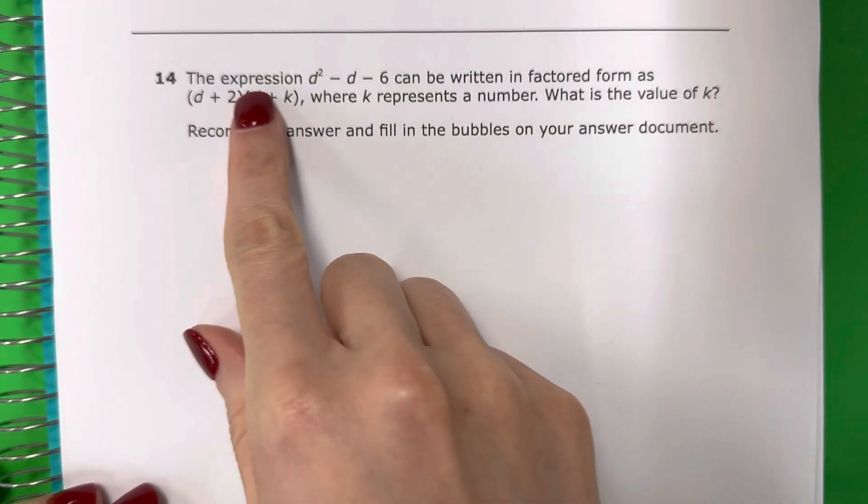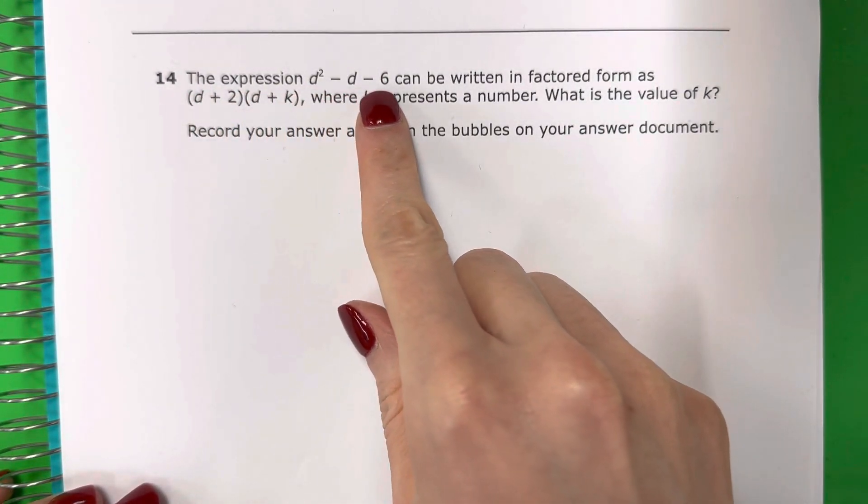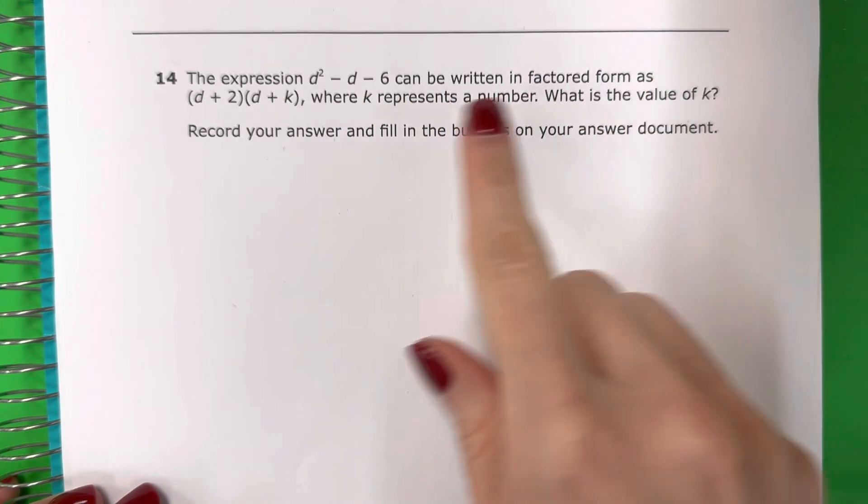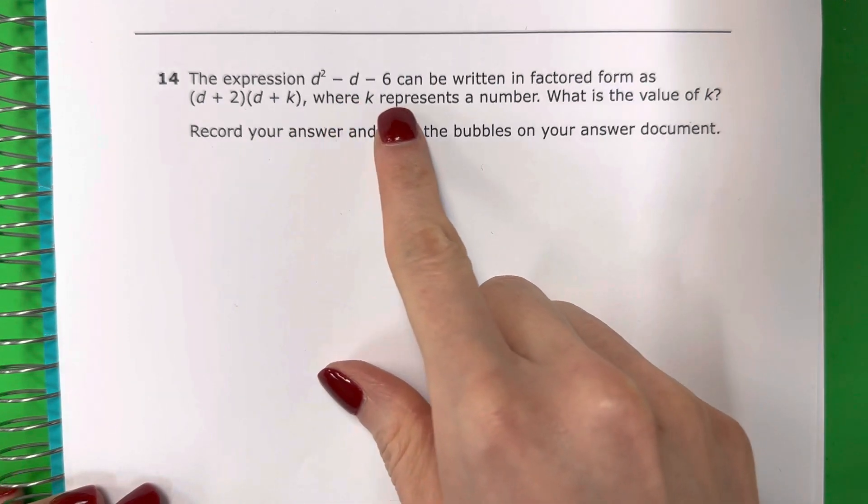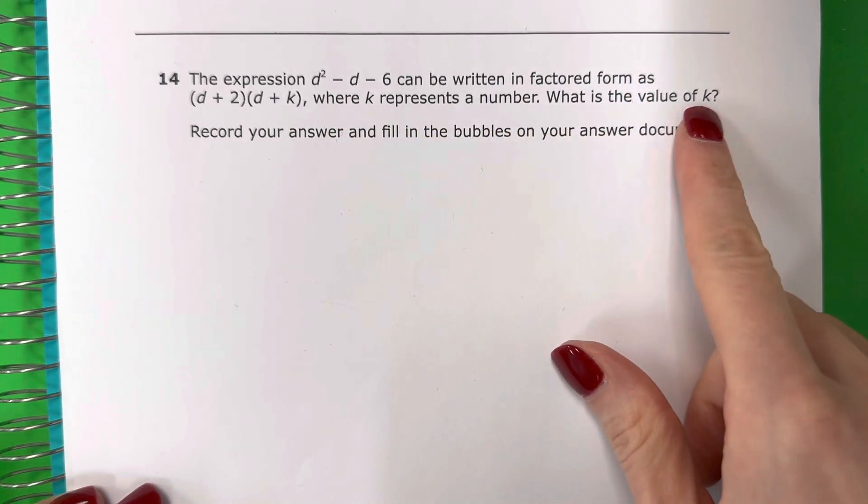Question 14. The expression d squared minus d minus 6 can be written in factored form as d plus 2 times d plus k, where k represents a number. What is the value of k?